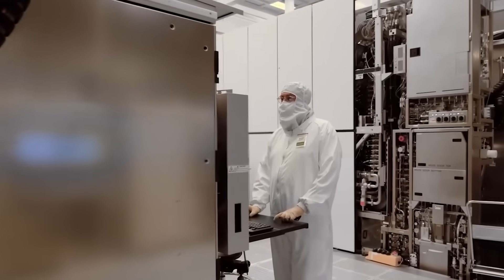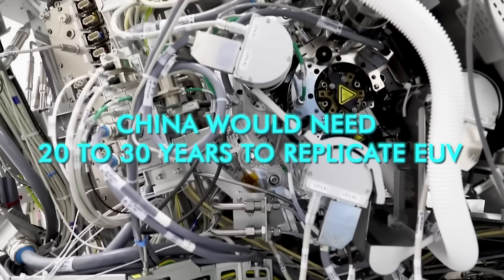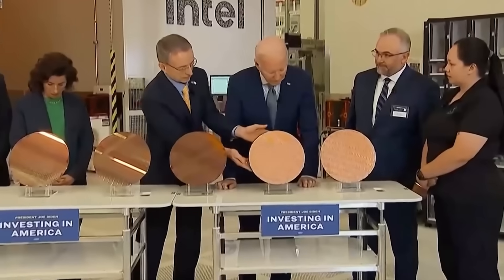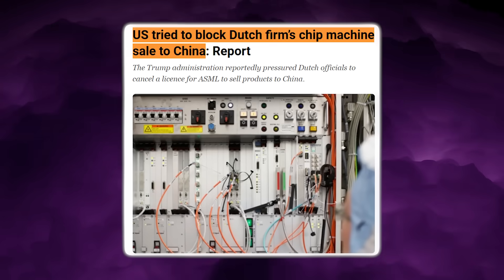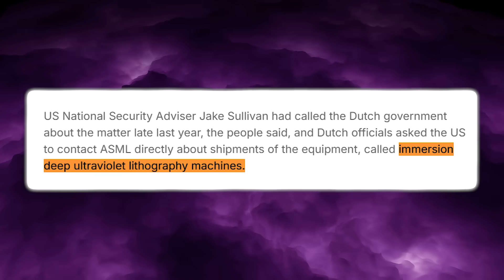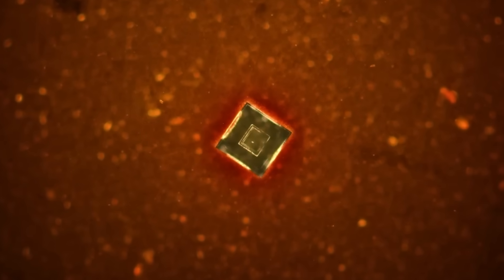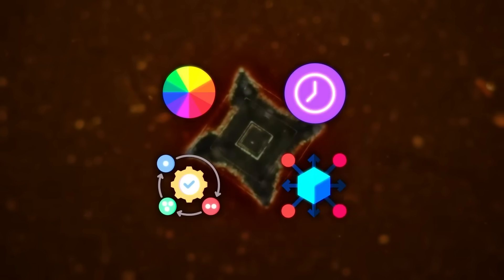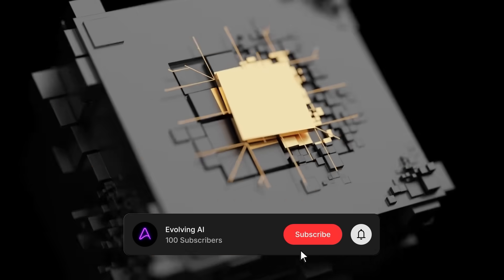That long and painful development timeline is precisely why many analysts believed China would need 20 to 30 years to replicate EUV. Even with massive investment, Western governments built policy around that belief. Starting in 2018, the United States pressured the Netherlands to block ASML from selling EUV machines to China. Then, in 2022, those restrictions expanded into sweeping export controls, targeting not just EUV, but also deep ultraviolet lithography tools, software, and advanced components. The goal was simple: slow China's semiconductor progress long enough to preserve a permanent technological lead. However, the Shenzhen prototype challenges the idea that this lead can be frozen indefinitely.